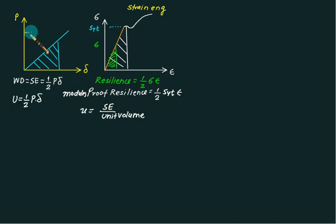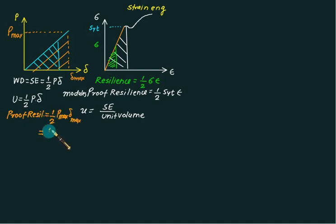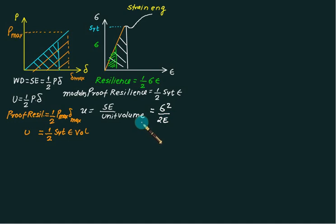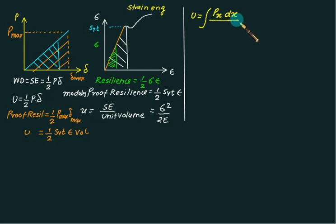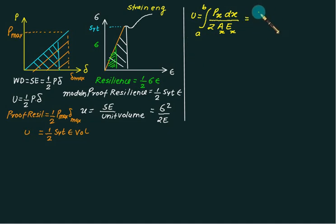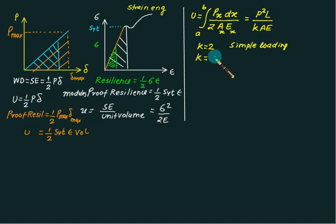Total strain energy is given as (1/2) × P × delta. Correspondingly, we have delta_max, and the whole area is called proof resilience: (1/2) × P_max × delta_max, same as (1/2) × S_yt × epsilon × volume. Replacing epsilon by sigma/E, the strain energy per unit volume is u = sigma²/(2E). For axial loading, the strain energy is given by the integral from A to B of P(x)² dx / (2 × A(x) × E(x)). For constant P, this reduces to P²L/(kE), where k=2 for simple loading and k=6 for self-weight elongation.